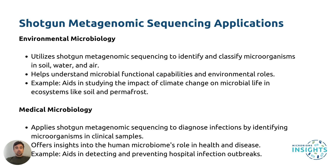It's also used in medical microbiology. In medicine, shotgun metagenomic sequencing is used to diagnose infections and to study the role of the human microbiome in health and disease. For example, in hospitals, this technique aids in detecting and preventing infection outbreaks by identifying pathogenic microorganisms in clinical samples. As it also analyzes microbial functions, it can also be used to study antimicrobial resistance within infectious bacteria, which can help guide clinicians to the most suitable treatments for patients.